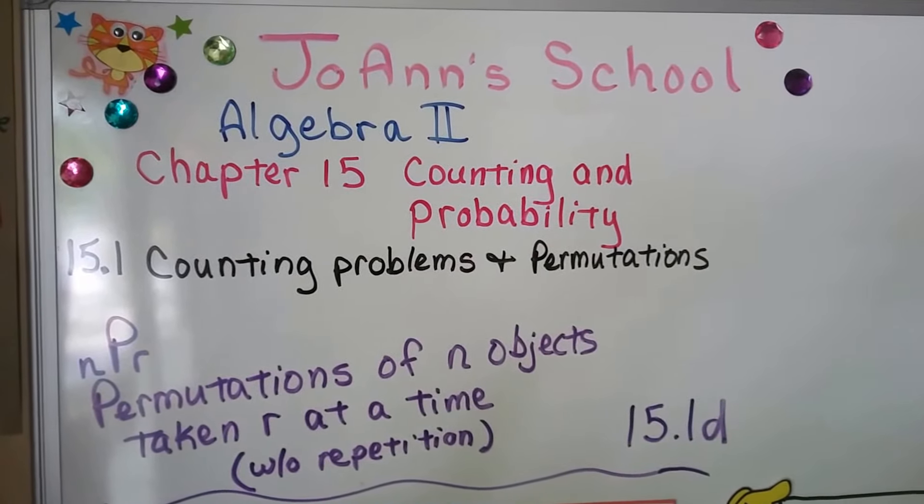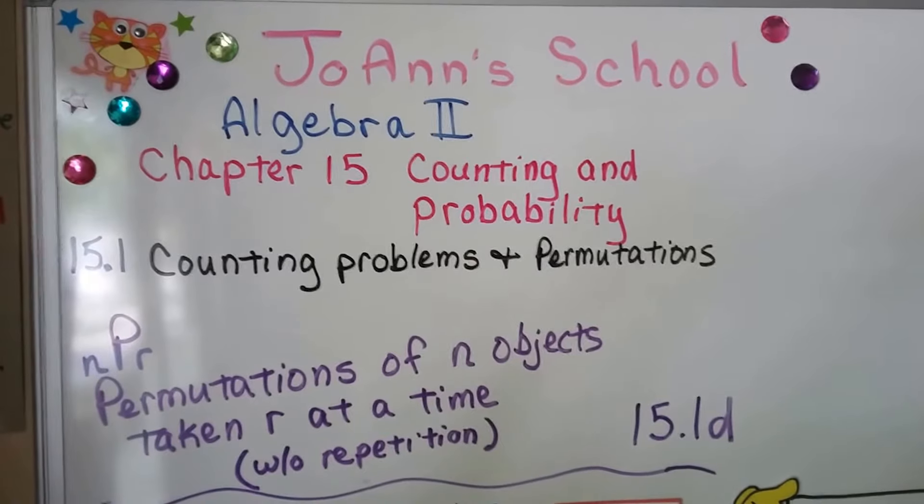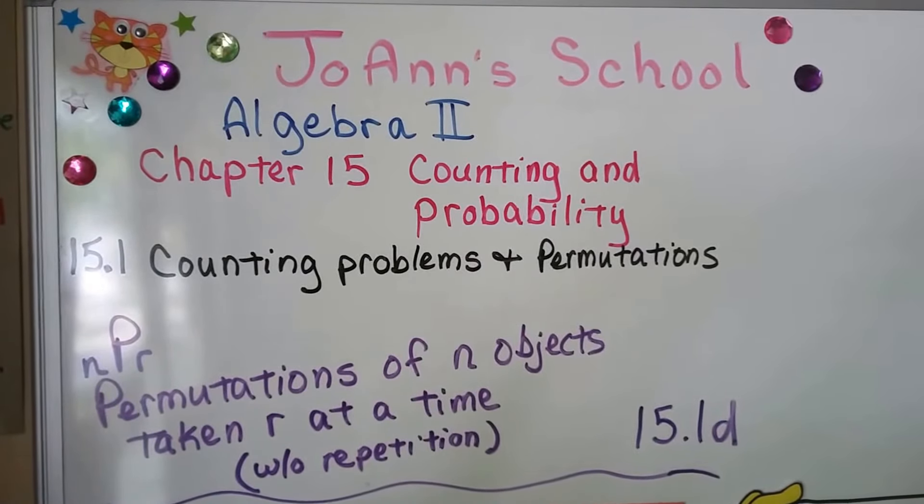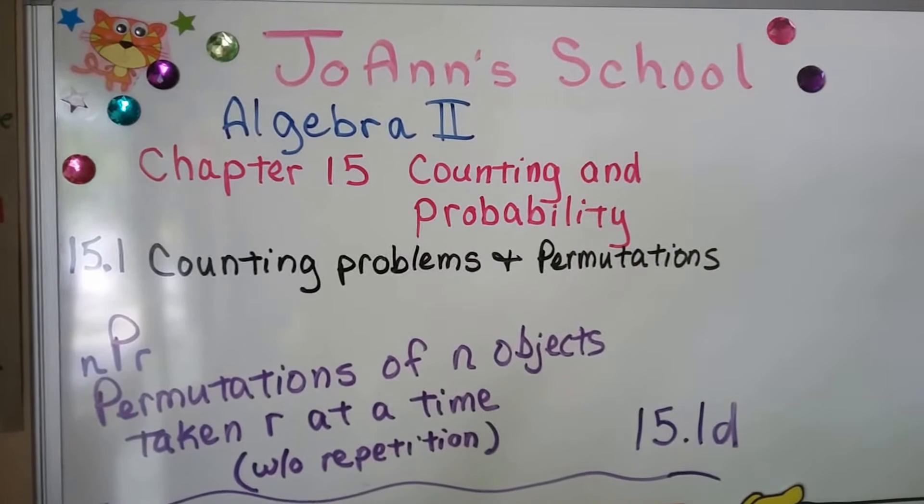We're at the final part of 15.1. This is nPr, the permutations of n objects taken r at a time without repetition.